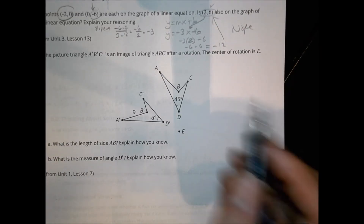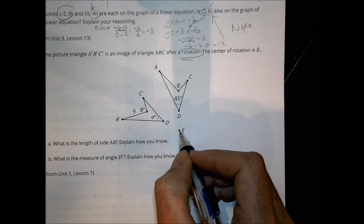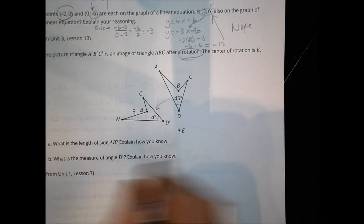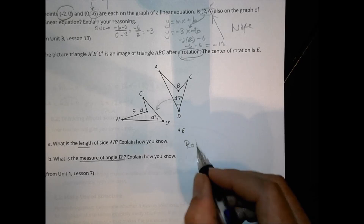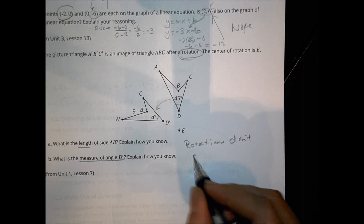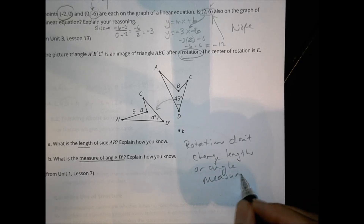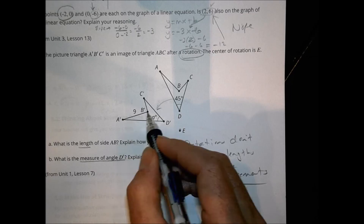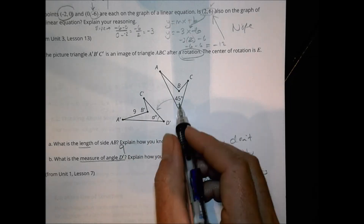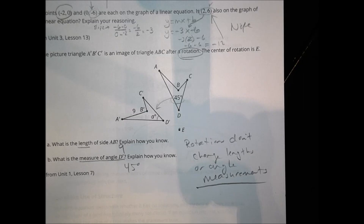Homework number 6: Triangle A'B'C' is an image of a triangle after a rotation with center E. The key thing to remember is that rotations don't change lengths or angle measurements. So the side length of A'B' is still the same — if the original is 9, this is also 9. If the angle is 45 degrees, this is also 45 degrees. Lengths and angle measurements do not change with a rotation, unlike a dilation which would change the lengths.